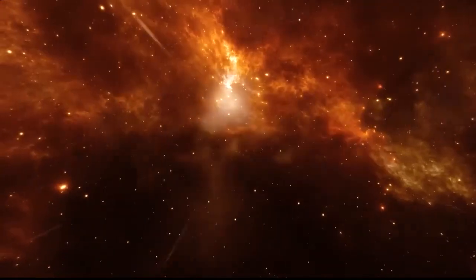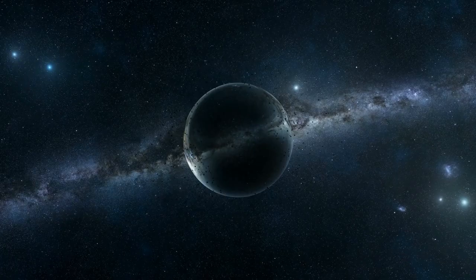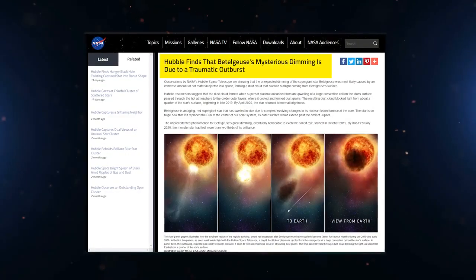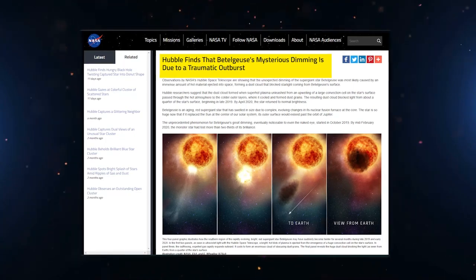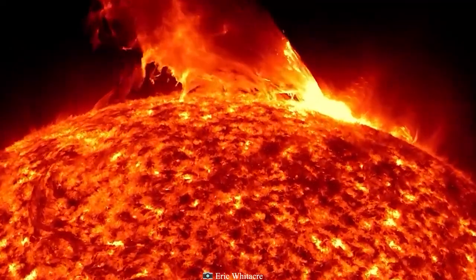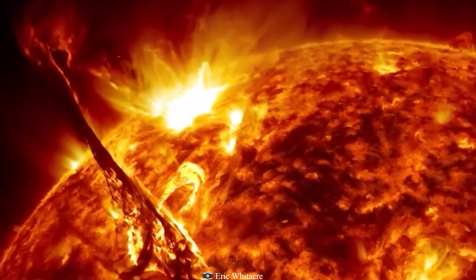Betelgeuse is a red giant star, which means that when it dies, it will explode in a supernova, possibly turning into a black hole in the process. Let's say that today is the day Betelgeuse decides to stop shining and puts on a great light show. But before you buy tickets for Betelgeuse's big show, you might want to know what kind of damage an exploding star could do to Earth.